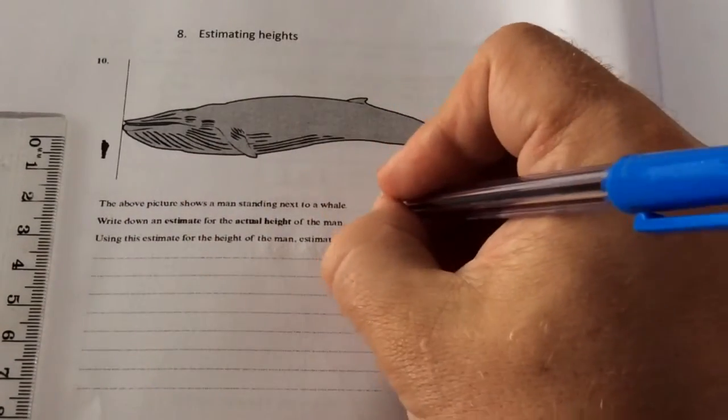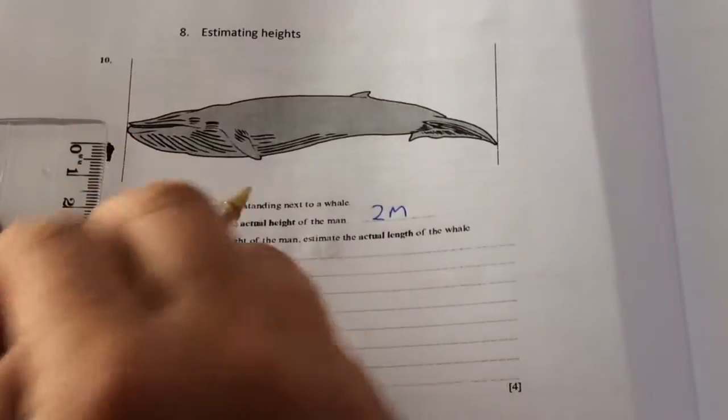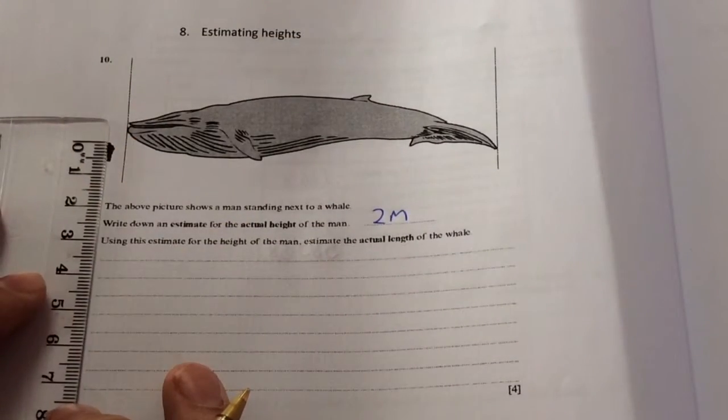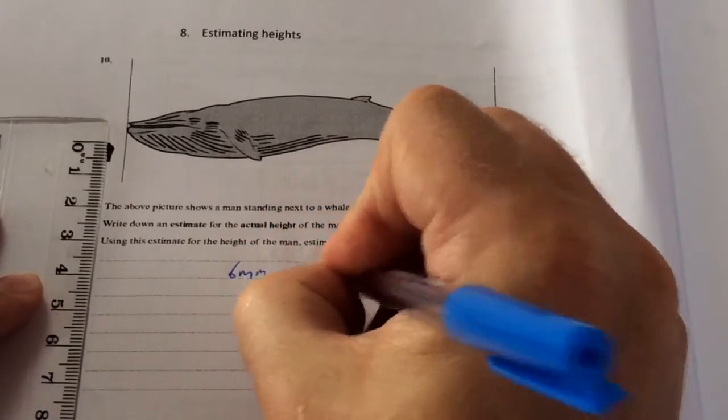A man is normally 6 foot or 2 metres. So I'm going to put 2 metres there and I'm going to estimate by measuring the man in millimetres. 6 millimetres is roughly 2 metres.